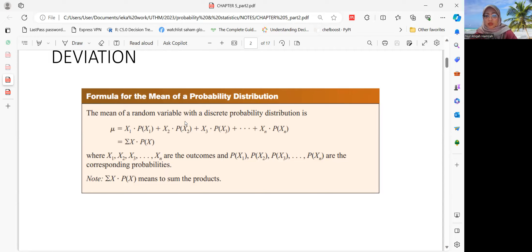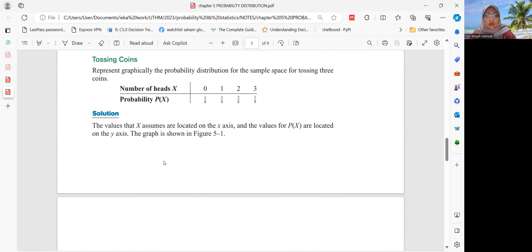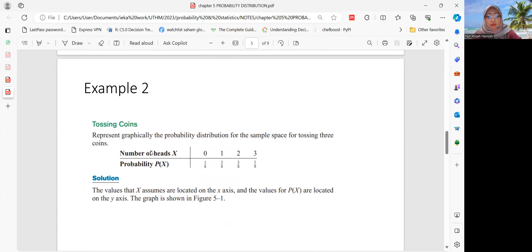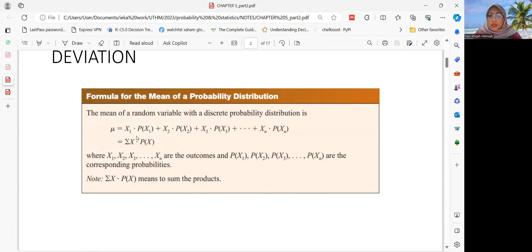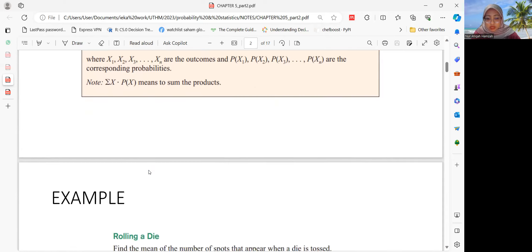So kalau kita tengok the previous lecture's notes, kita ada tengok the probability distribution table. The number of x, contohnya x ni ada, the number of x adalah kita punya x, so 0, 1, 2, 3, and then kita punya probability. Probability is the corresponding probability untuk each, 1 over 8, 3 over 8, 3 over 8, and 1 over 8. So untuk dapatkan mean pula, kita menggunakan values yang memang ada dalam probability distribution table. Kita just multiply, kita gunakan the value of x with the P(x) and then kita cari dia punya total summation untuk overall.